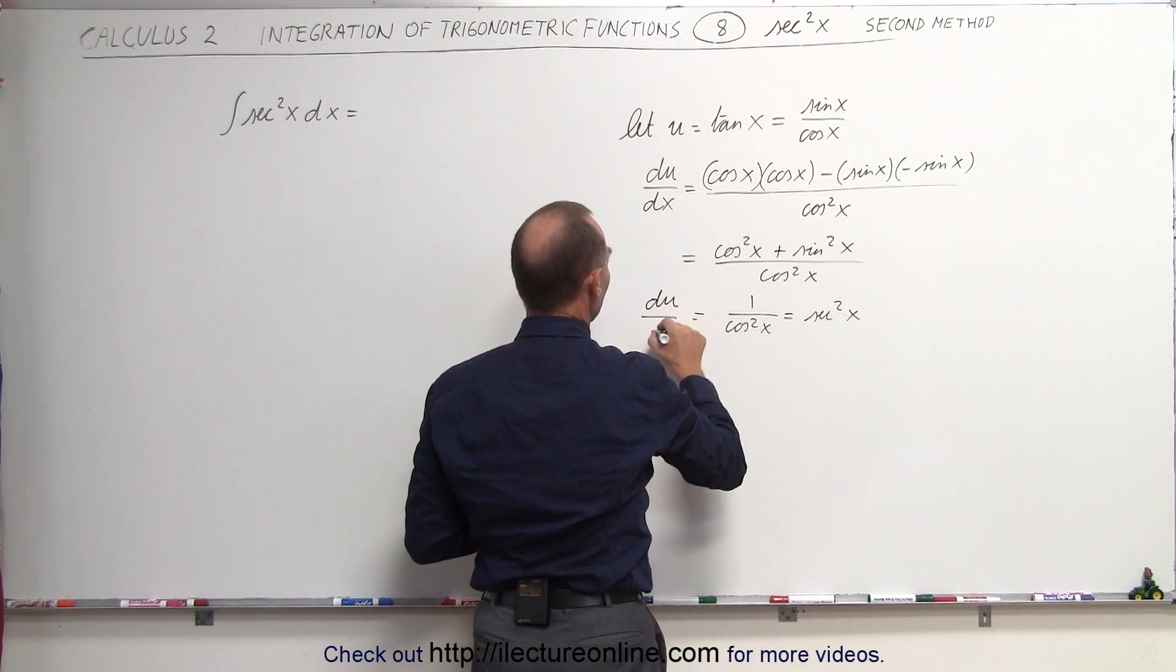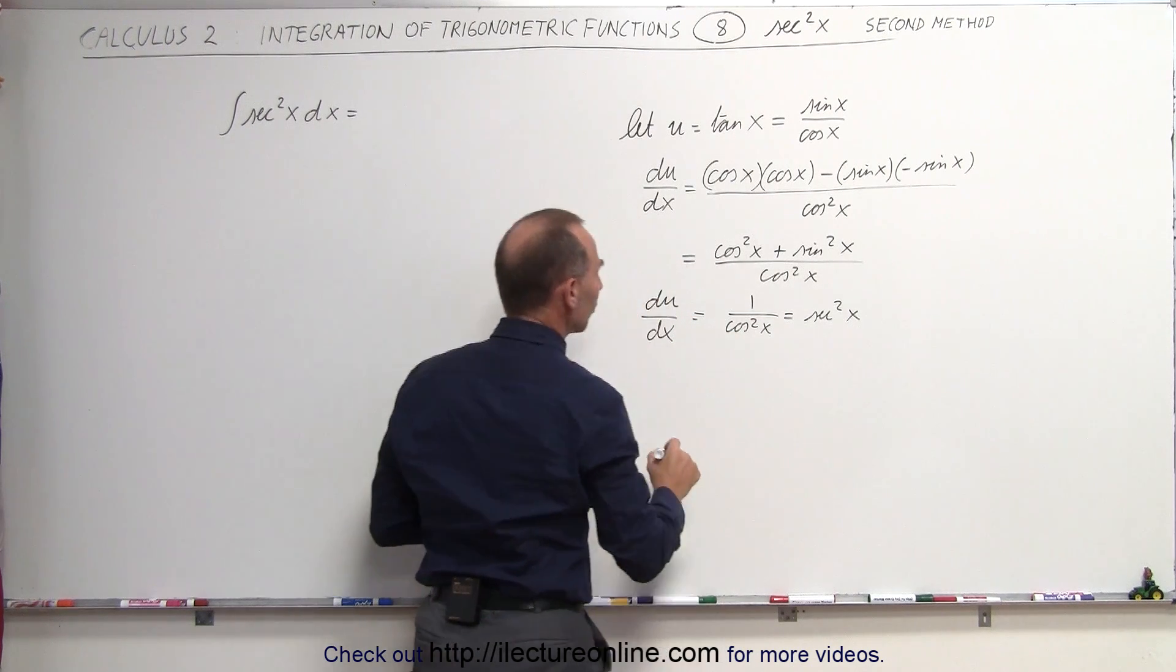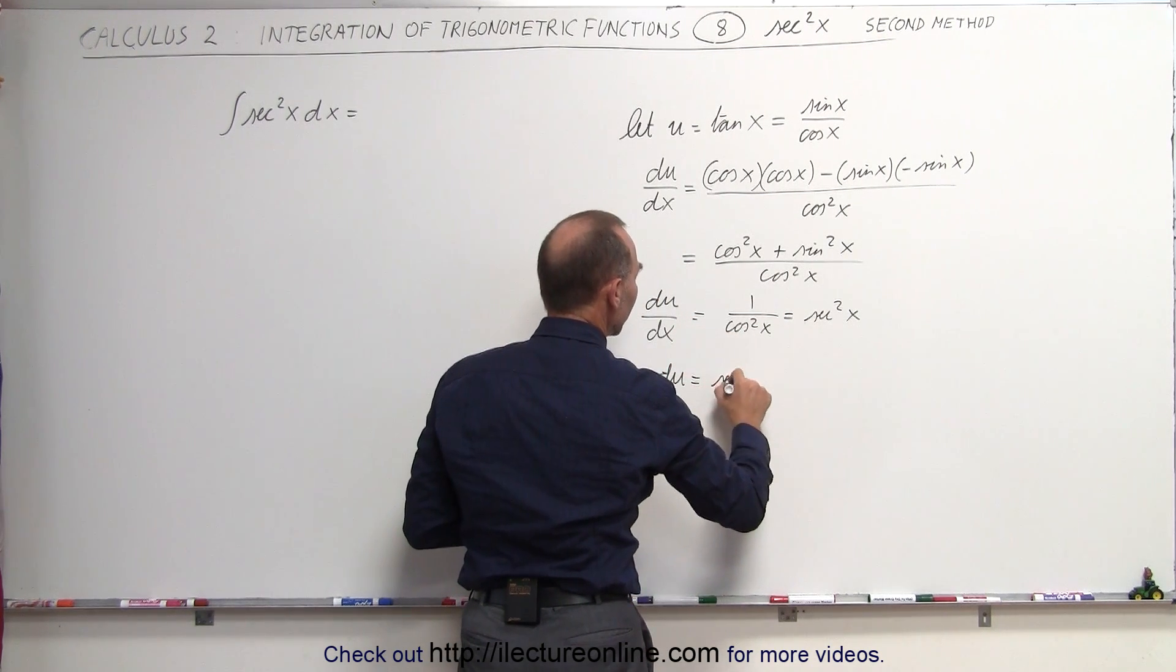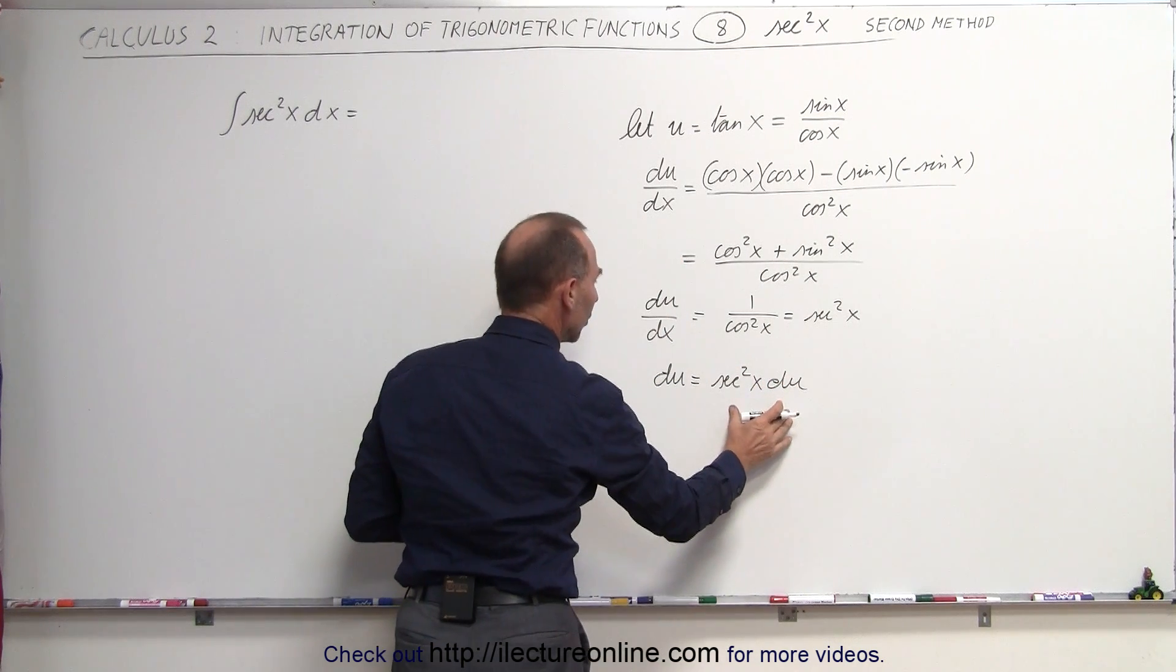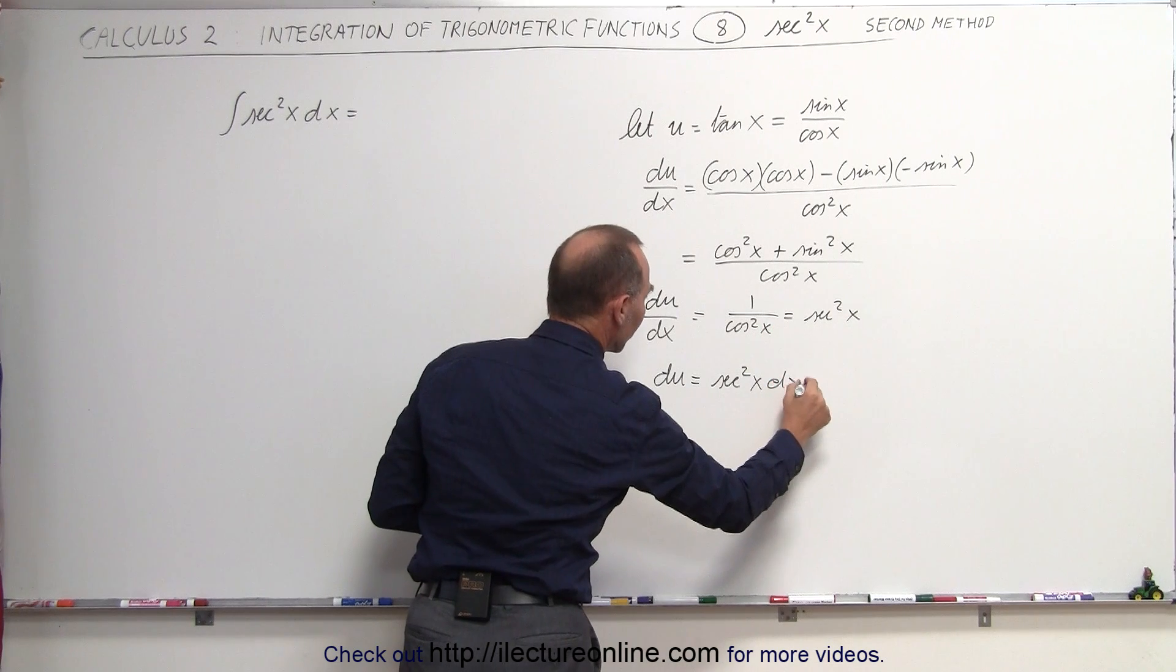du dx is equal to the secant squared of x, or du is equal to the secant squared of x times du. If you take, whoop, not du, but dx, because I'm moving the dx over.